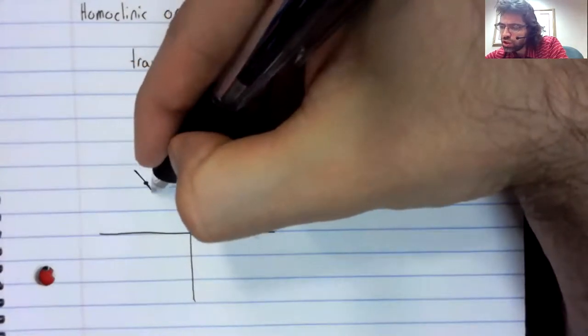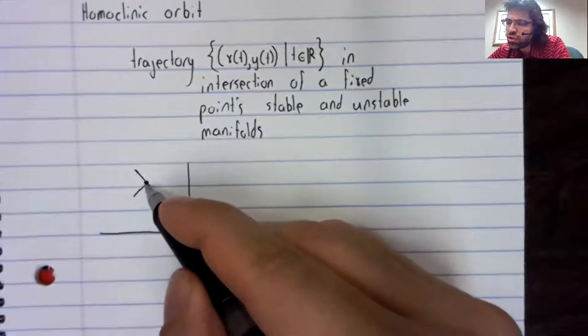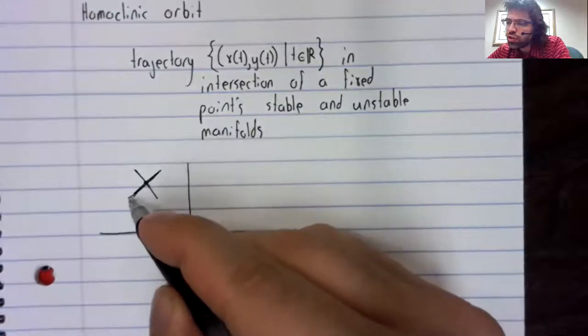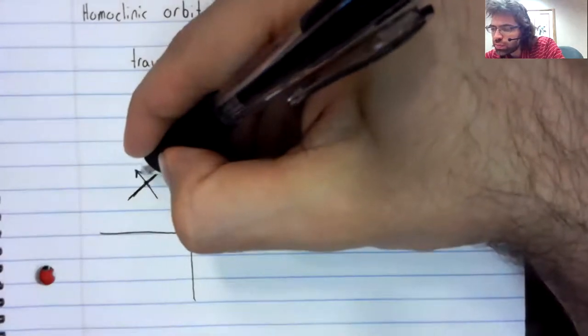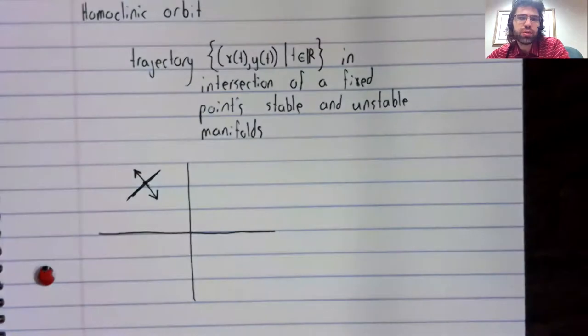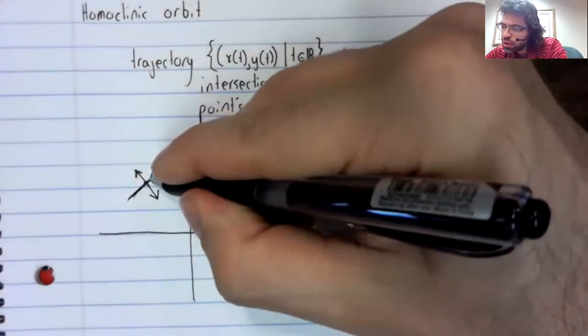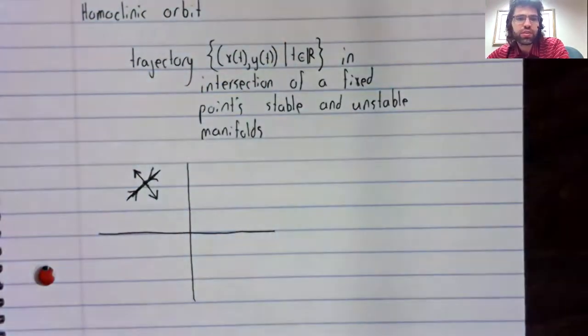So near the fixed point, trajectories look like saddles. We've got trajectories going out and we've got trajectories coming in.